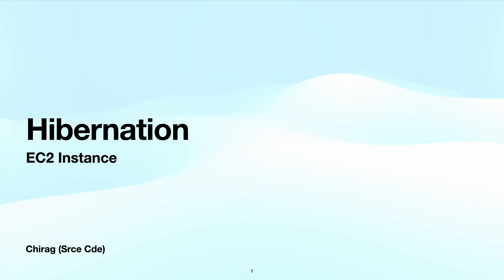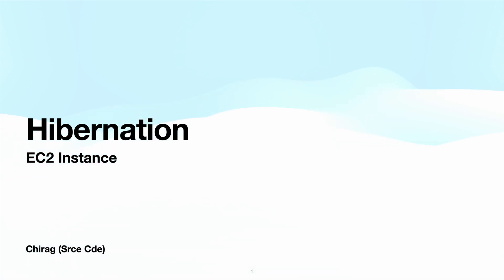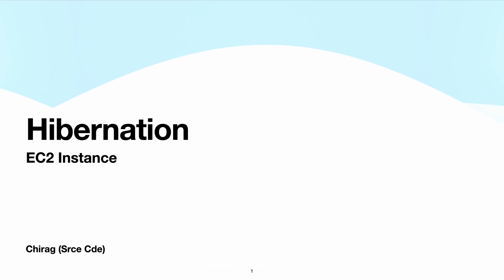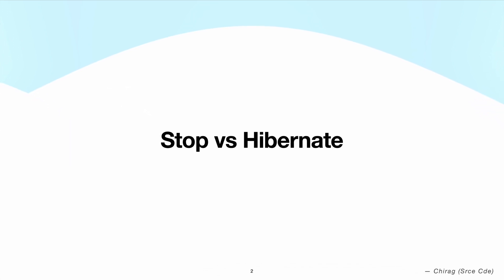When you hibernate an EC2 instance, it ultimately results in a stop state. So what is the difference between stopping an instance versus hibernating an instance? Let's try to understand the basic difference between stop and hibernate.